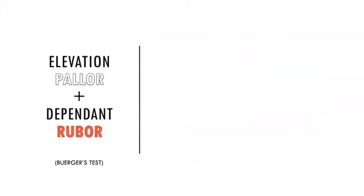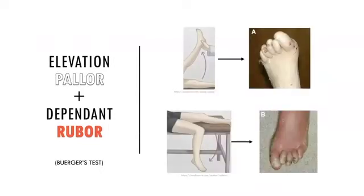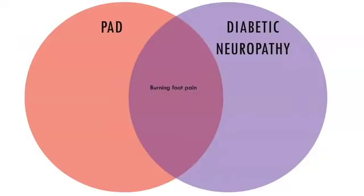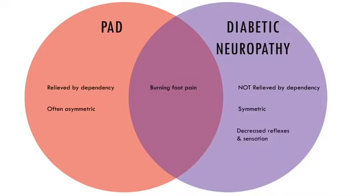Patients with rest pain often have elevation pallor and dependent rubor, which is when the limb goes pale when lifted and becomes dusky red when returned to a dependent position. Diabetic neuropathy can be mistaken for ischemic rest pain, as it is also a burning or shooting sensation in the foot that is worse at night. Certain features can help distinguish diabetic neuropathy from ischemic rest pain: it is not relieved by dependency of the foot, it is often symmetrically distributed in both legs, and associated with decreased reflexes and vibratory sensation. Neuropathy and vascular disease can also co-exist.